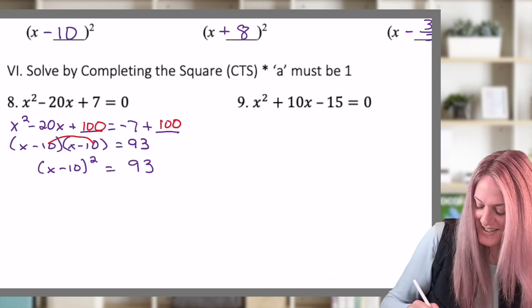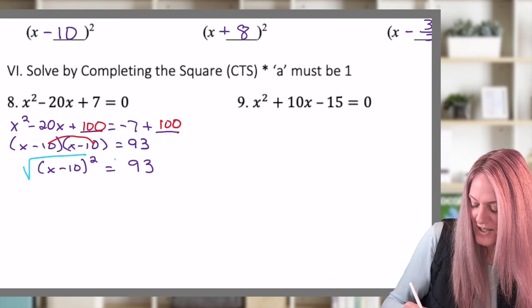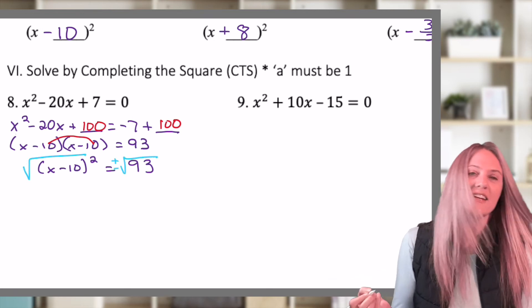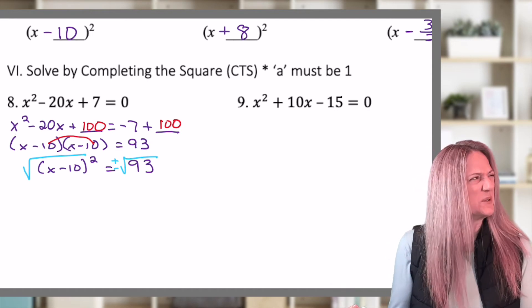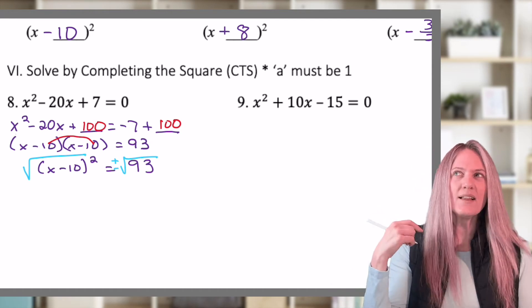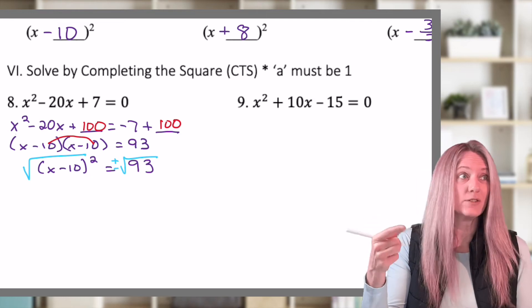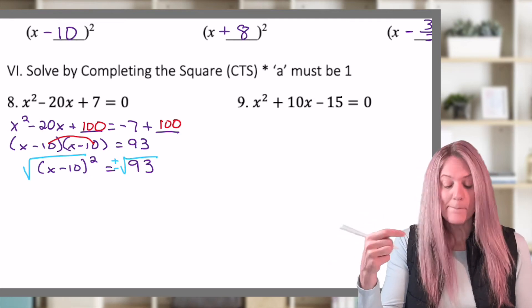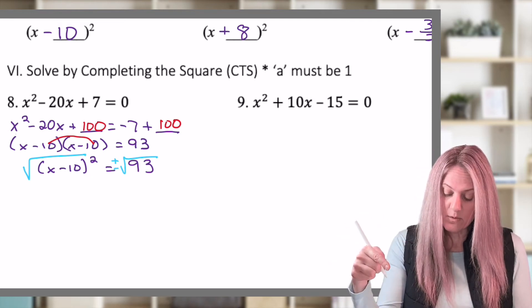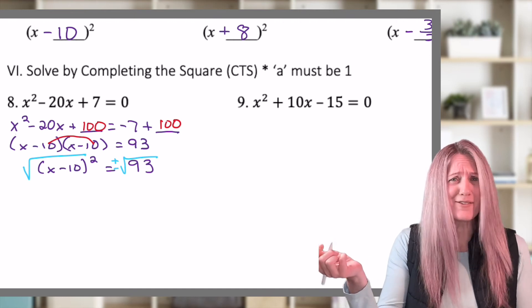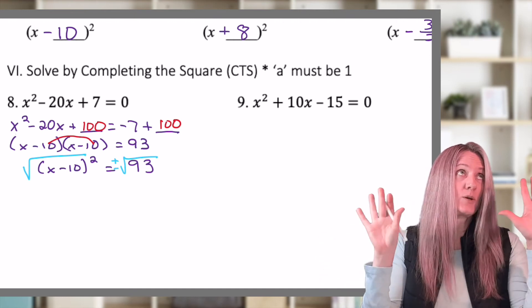So back to square rooting. Let's square root both sides. Remember that we get two possibilities, positive and negative, square root of 93. Ooh, square root of 93. Well, I know it's divisible by 3 because 9 plus 3 is 12, and 12 is divisible by 3. But 3 goes into 93 31 times. Neither of those are perfect squares, so I'm leaving it.